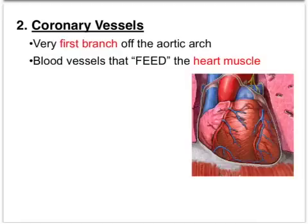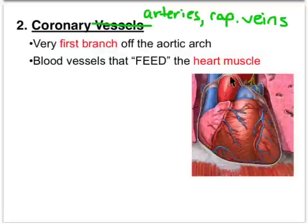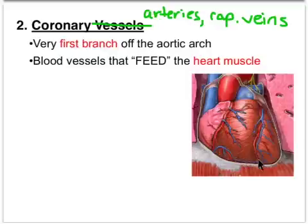The second set of major blood vessels are the coronary vessels. When I say vessels I mean the arteries, capillaries, and veins as a whole group. The coronary arteries are the first branch off the aortic arch, coming out of the left ventricle. These are the blood vessels that feed the heart muscle. The red ones are the coronary arteries and the blue ones are the coronary veins.